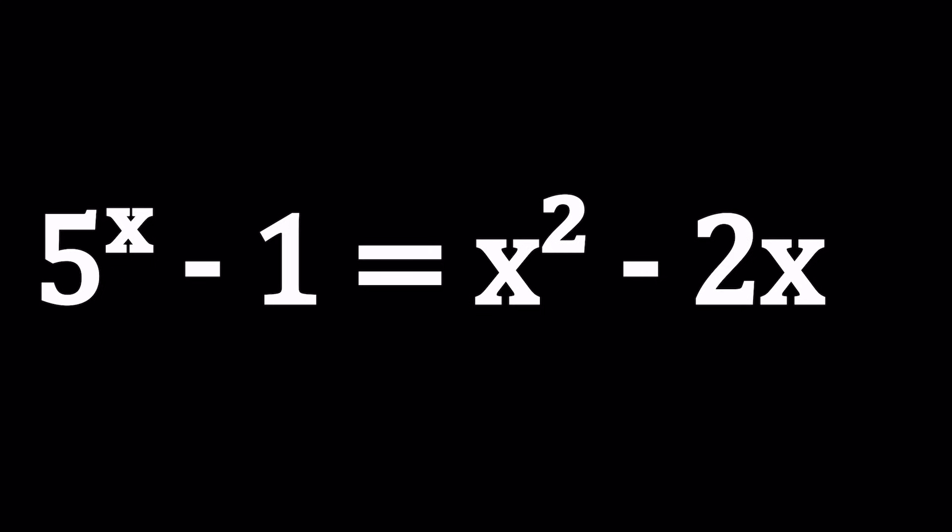Hello everyone. In this video, we're going to be solving a very interesting equation. We have 5 to the power x minus 1 equals x squared minus 2x. This is a non-standard or transcendental equation. How do we solve it? We definitely need a non-standard method.